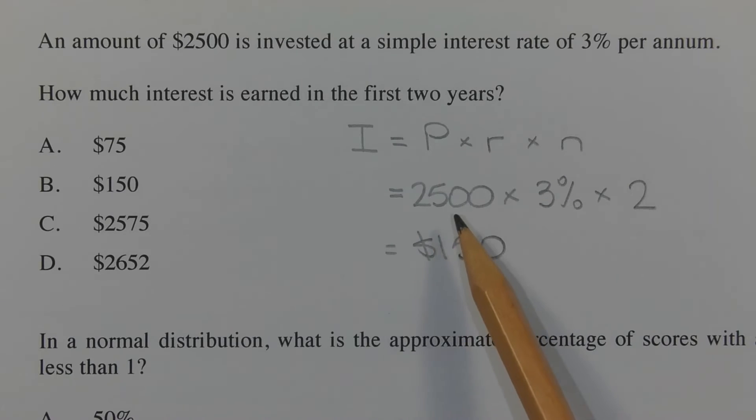So substituting those three values for P, R, and N respectively, we get I or the interest is equal to 2,500 times 3% times 2, which equals $150. Therefore, the correct answer is option B.